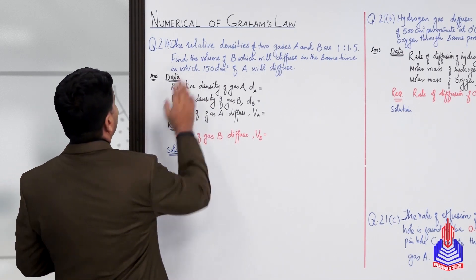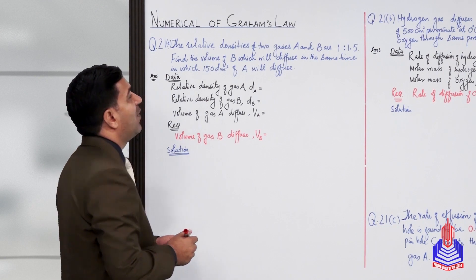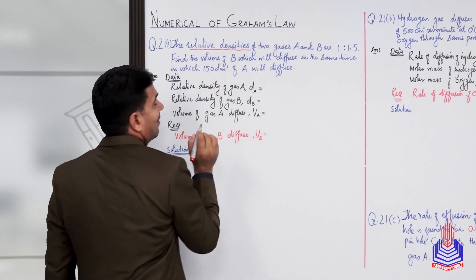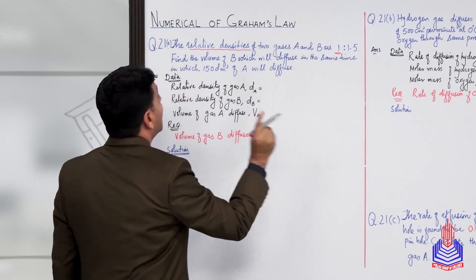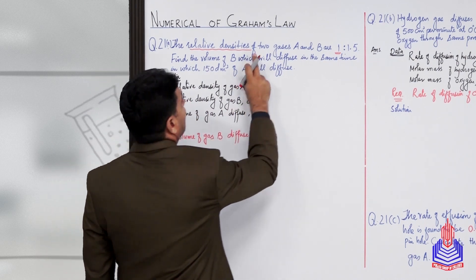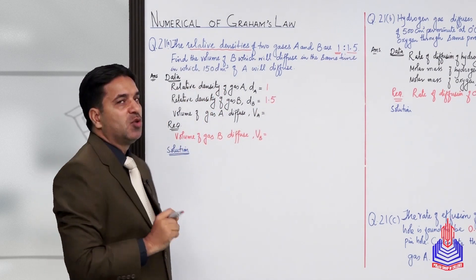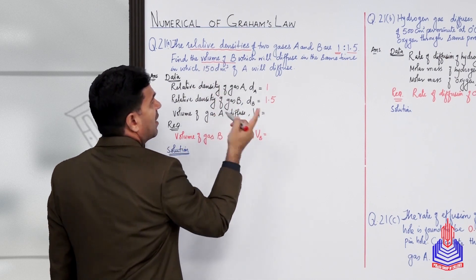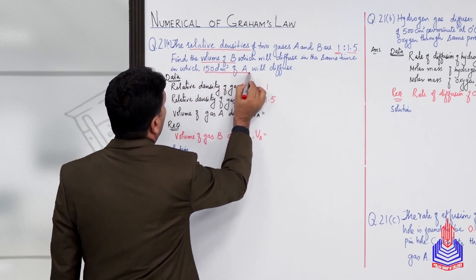The statement of the numerical: the relative density of gas A is 1 and the relative density of gas B is 1.5. Both gases' relative densities are given. Second point: find the volume of B which will diffuse in the same time in which 150 dm³ of A will diffuse.